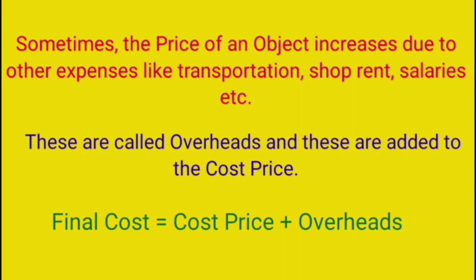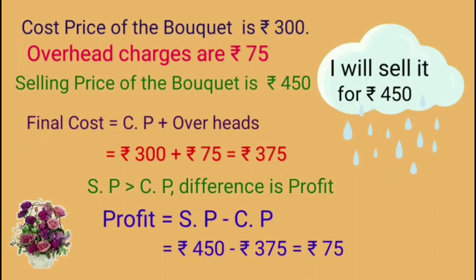Now children, let us see how much Farah is going to charge as overheads on each bouquet, what is the selling price of each bouquet, and the profit on each bouquet. As you know, the cost price of the bouquet is 300 rupees and Farah decided to charge 75 rupees on each bouquet as overheads. So overhead charges are 75 rupees on each bouquet and she decided to sell the bouquet for 450 rupees. The cost price of the bouquet is not only 300 rupees — we have to include overhead charges also to find the final cost. Final cost is equal to CP plus overheads, that is 300 rupees plus 75 rupees. The sum is 375 rupees, which is the final cost of the bouquet.